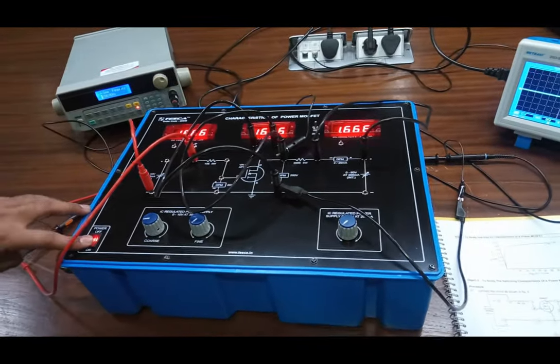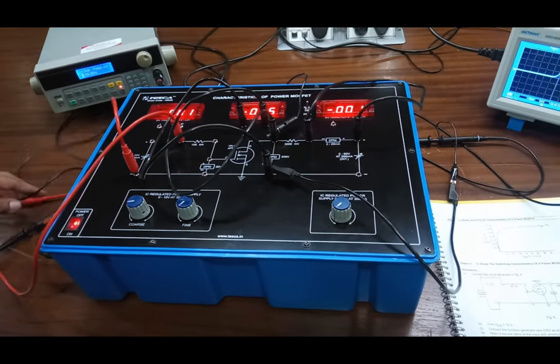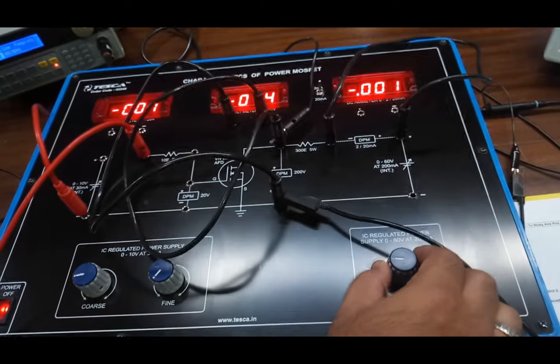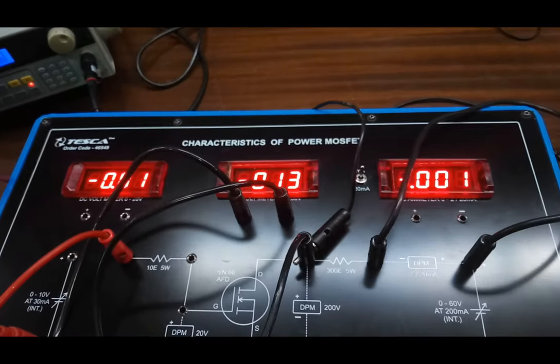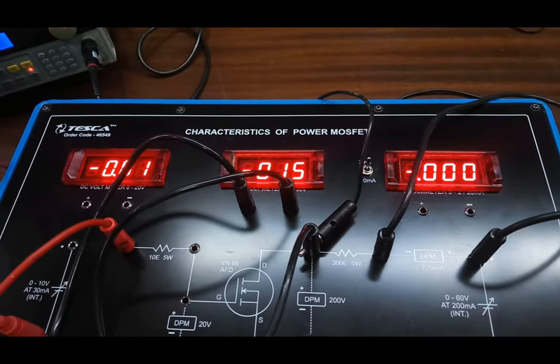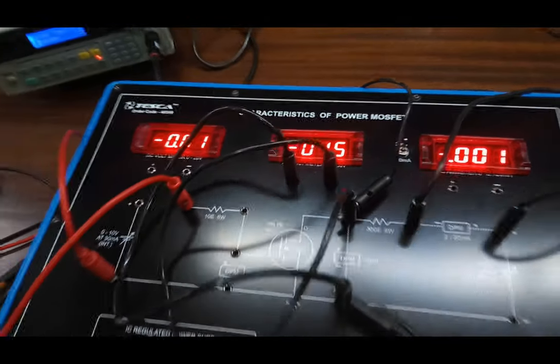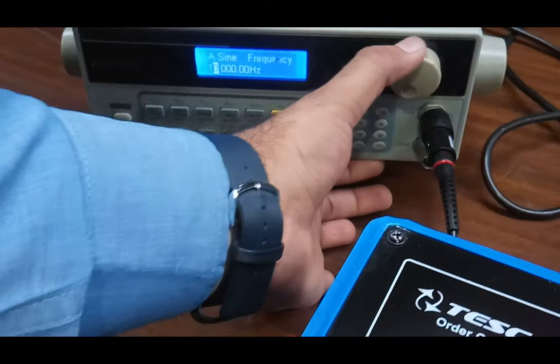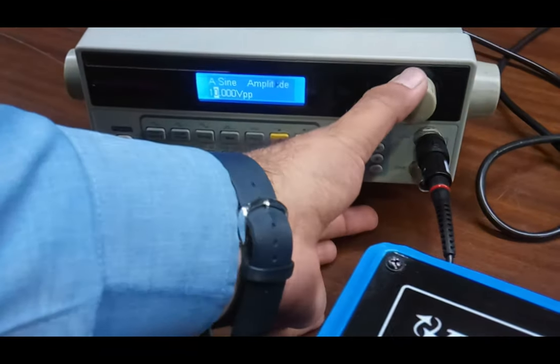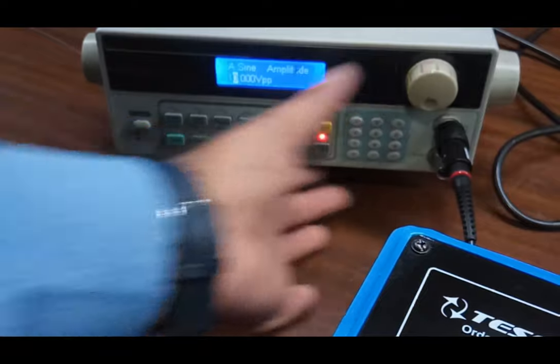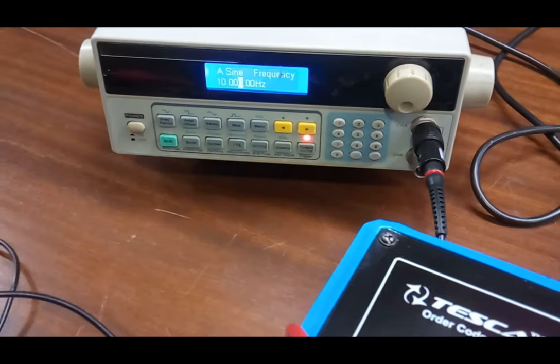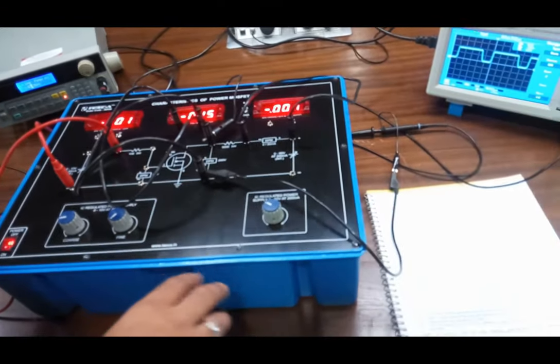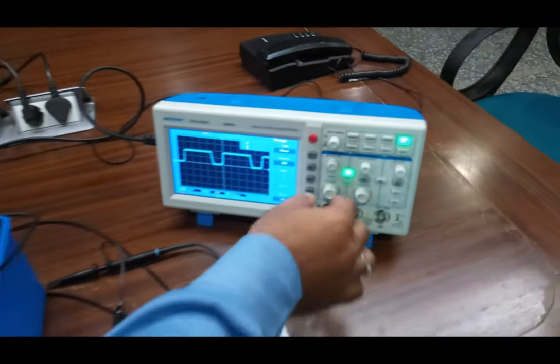Now we power on the kit. First, increase the drain source voltage around 15V and set the oscillator frequency 10KHz and VPP around 10VPP. So this is our input. And now we observe the output waveform at the oscilloscope.